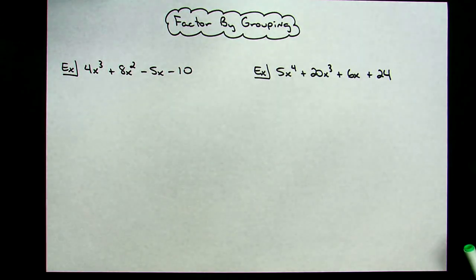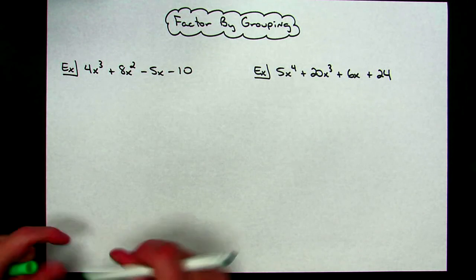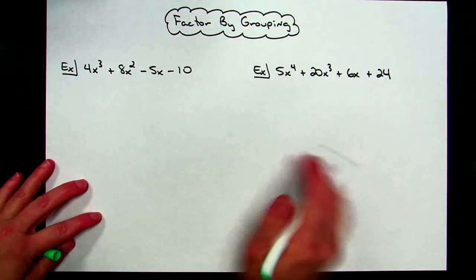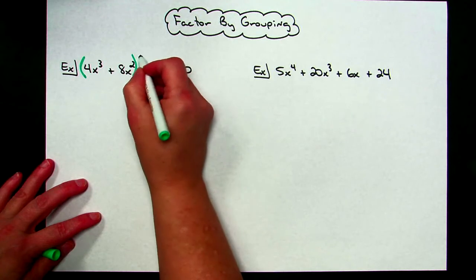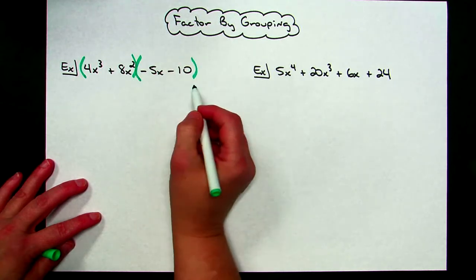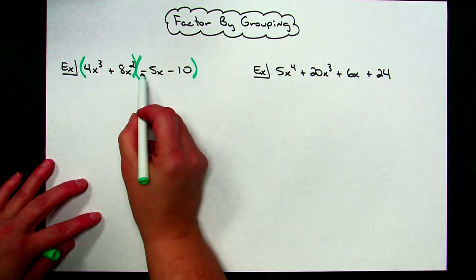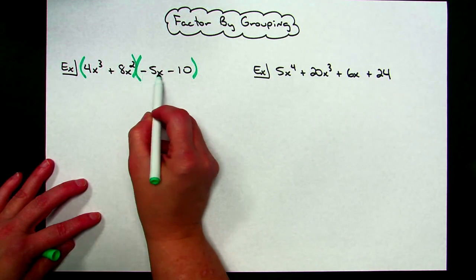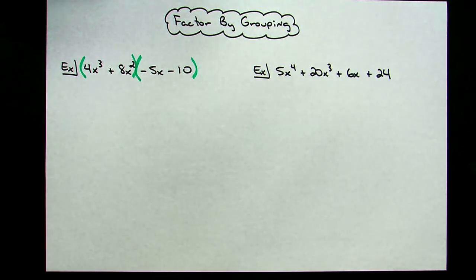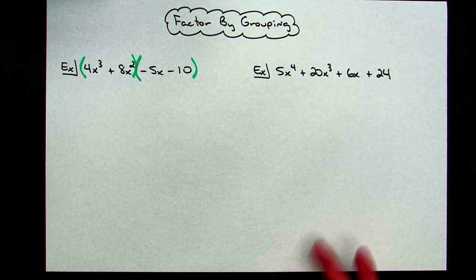The first thing you're going to do — since it is called factor by grouping — you are going to choose to group the first two terms together, and I'm going to group the second two terms together. Now notice when I put that set of parentheses in there, I did include that little minus sign right there. That clearly shows me now that I've got a negative 5x sitting right there in that term, so I want to make sure that I'm aware of that.